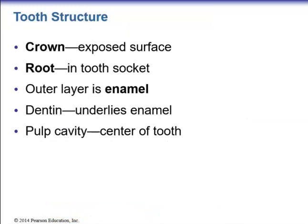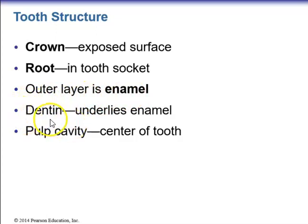The structures of a tooth include: the crown — the exposed surface we see when we smile; the root — the portion within the tooth socket; enamel — the outer layer; dentin — the layer underlying the enamel; and the pulp cavity at the center, which contains the root canal housing the blood and nerve supply to the tooth. A root canal procedure removes infected material from this structure to relieve pain while preserving the tooth.